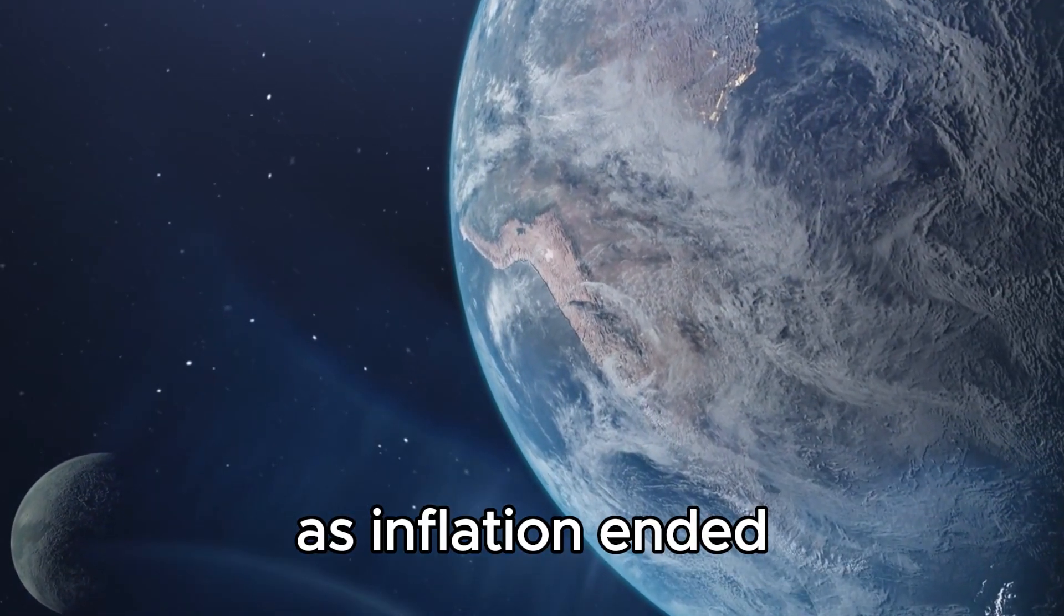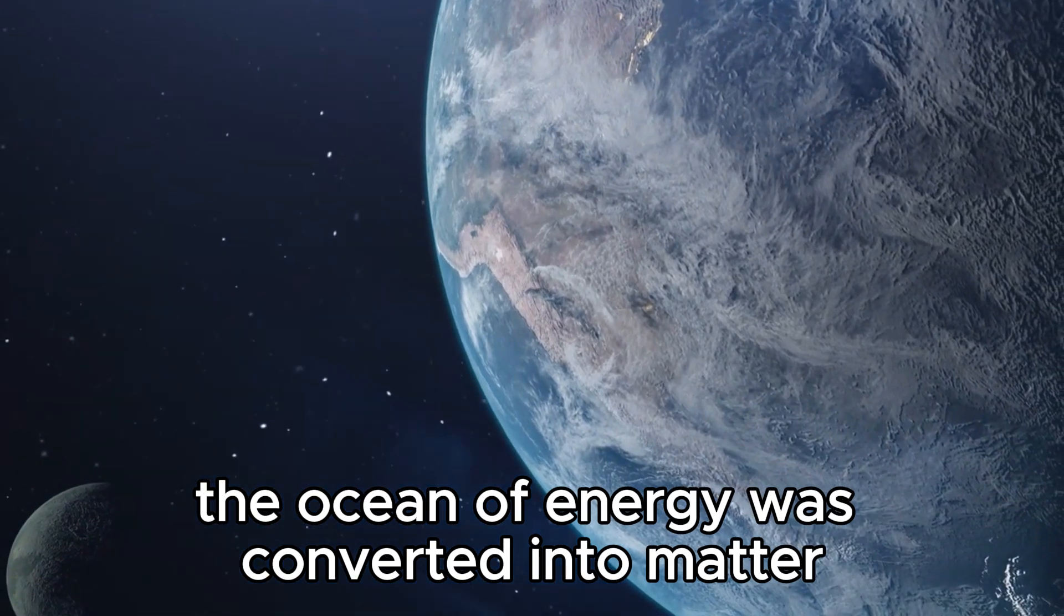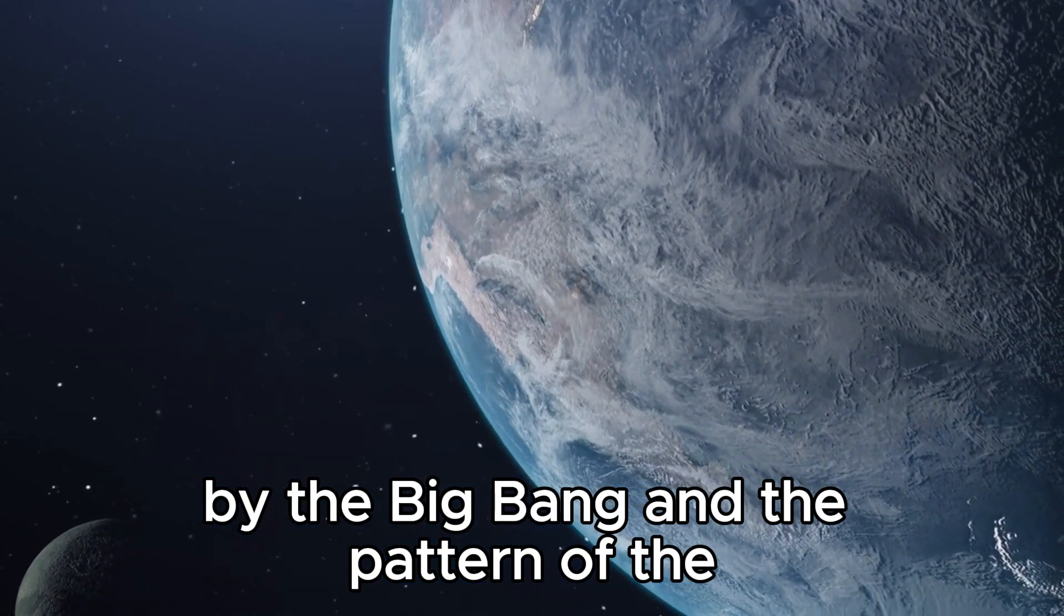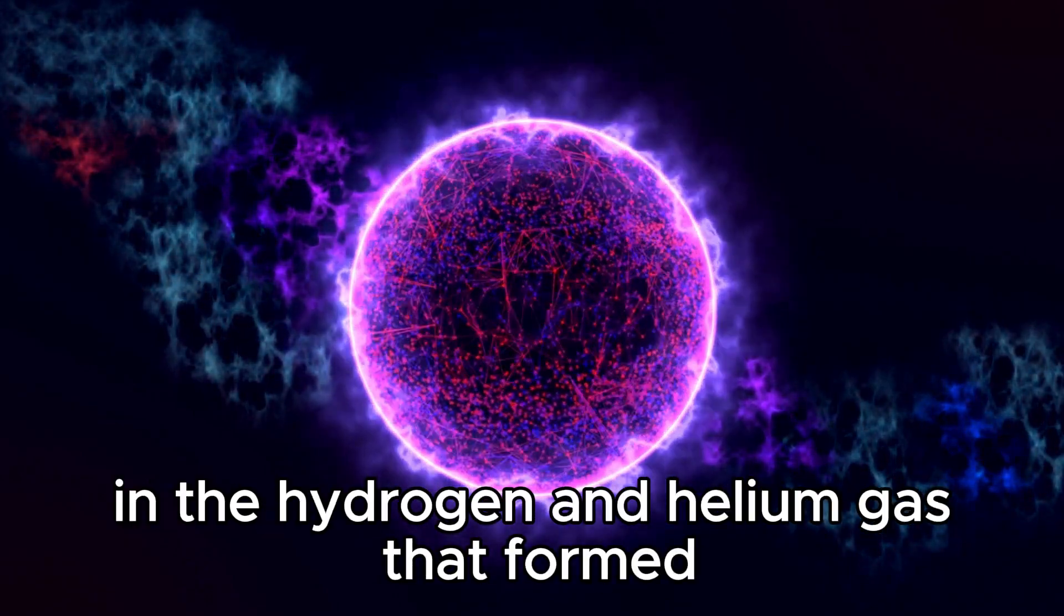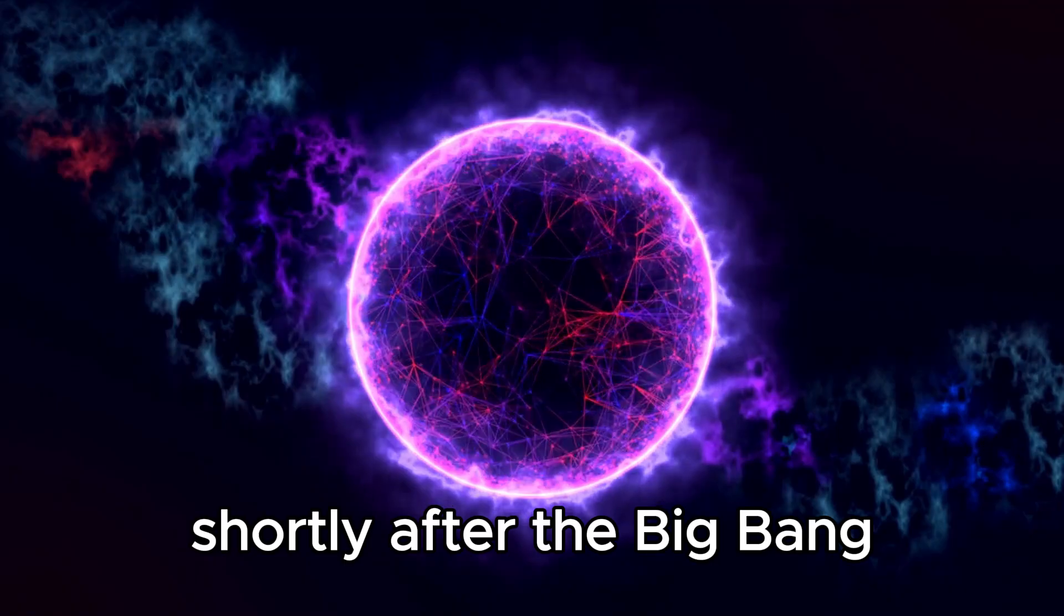As inflation ended, the ocean of energy was converted into matter by the Big Bang, and the pattern of the ripples was imprinted into our universe as regions of slightly different density in the hydrogen and helium gas that formed shortly after.